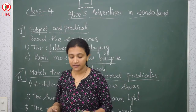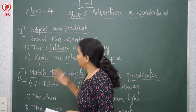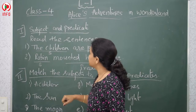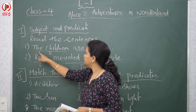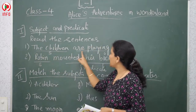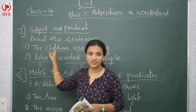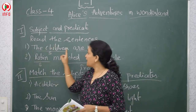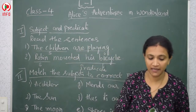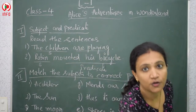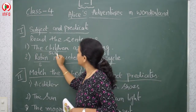So what are the subjects and what are predicates? I'll read the sentences. You also can see, I have written here: 'the children are playing.' So the subject is 'children' and the predicate is the rest of the sentence. 'The children' is the subject.